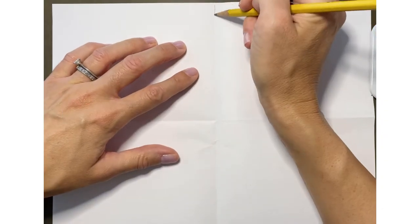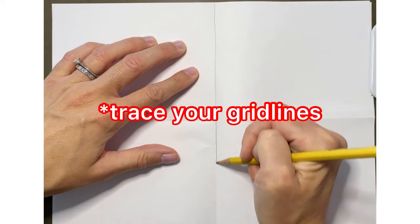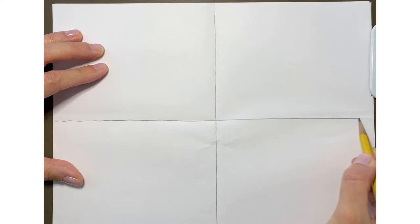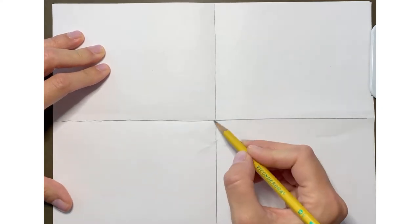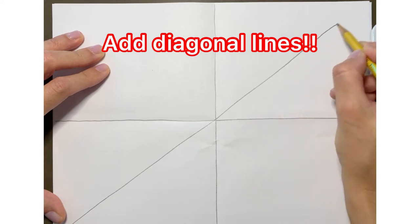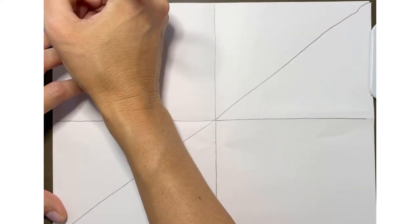So we're going to go ahead and trace these lines like this and I want you to make another line going across this way and this way.